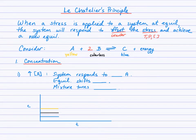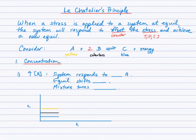Le Chatelier's Principle is covered in section 7.4 of your textbook. This is a very important concept and a challenging one, so try your best with it and we'll speak more in class about it. A system at equilibrium, when stressed, will respond to try to counter or offset that stress and achieve a new equilibrium. We're going to consider that in the context of different stresses: concentration, temperature, and pressure.